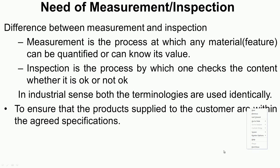Let us understand the need for measurement or inspection, and the difference between measurement and inspection. In the manufacturing area, we need to produce components with various features like depth, length, breadth, surface finish, parallelism, etcetera — all these features we have to measure and quantify; such a process is called measurement. Sometimes we have to inspect work pieces to just accept or reject them — only that information is required without measuring the physical variable; such an activity is known as inspection. In the industrial sense, both terminologies are used identically.